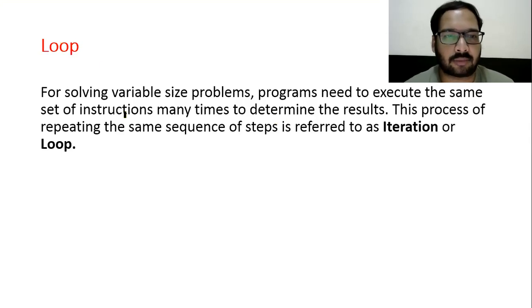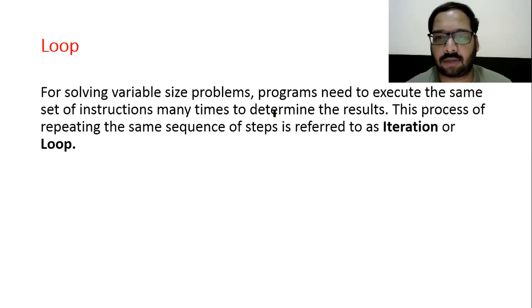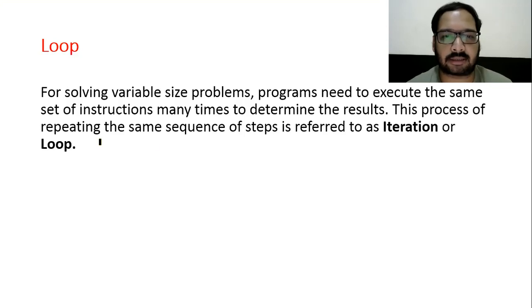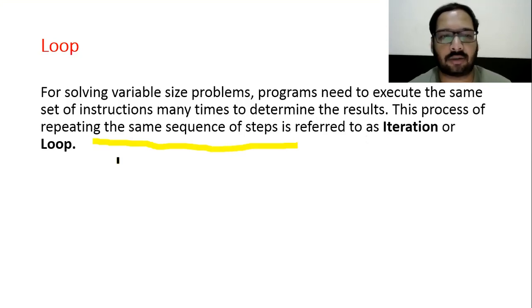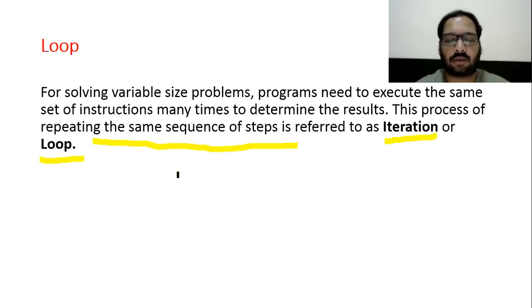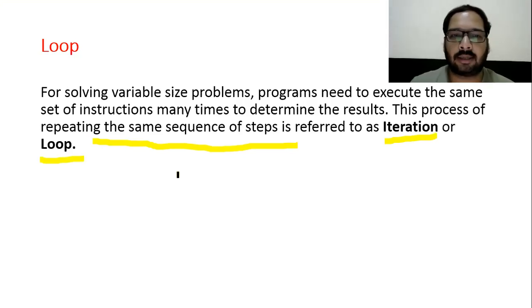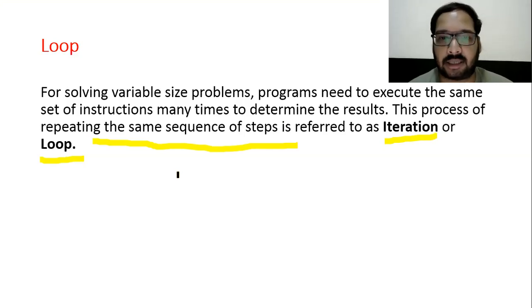Loop: for solving variable-size problems, programs need to execute some set of instructions many times. This process of repeating the same sequence of steps is referred to as iteration or loop. If you don't want to write the same task repeatedly, you can run a loop — it repeats automatically. There are three types of loops: for loop, while loop, and do-while loop.